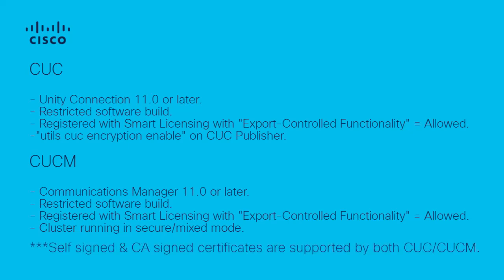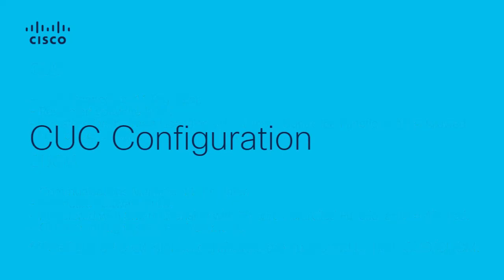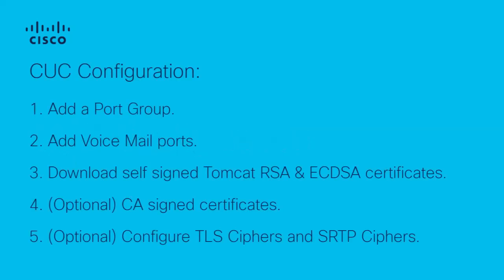For the purposes of this video, we'll be using self-signed certificates on both Unity and Call Manager, but CA signed certificates are also supported. To configure Unity Connection for next-generation security: first, add a port group; second, add voicemail ports; third, download self-signed Tomcat RSA and ECDSA certificates; fourth is an optional step if you decide to use CA signed certificates; and fifth is an optional step if you decide to adjust cipher negotiation requirements.